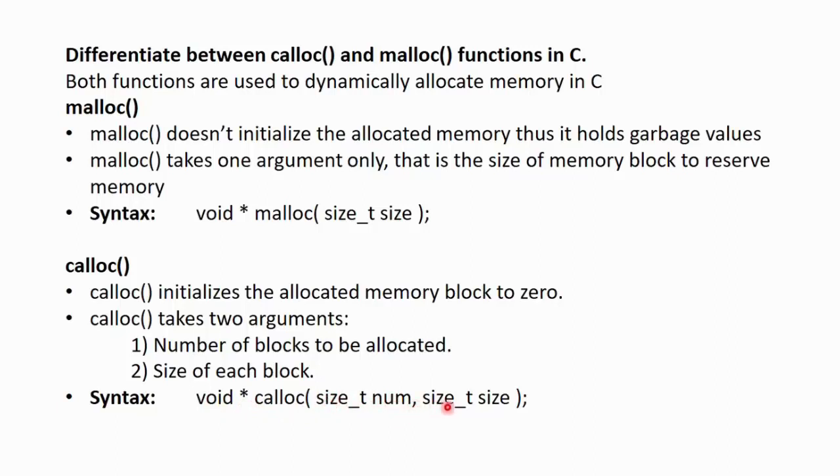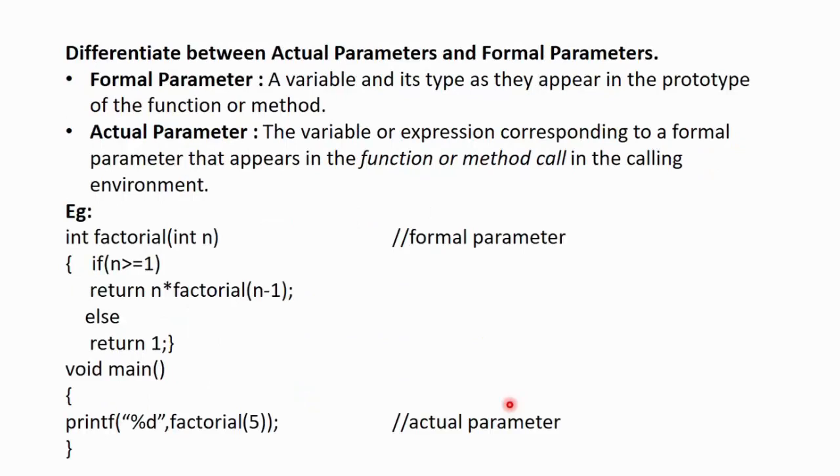Its syntax is void, asterisk, Calloc, the number of the blocks that need to be allocated, comma, the size of each block. Next question is differentiate between actual parameters and formal parameters. Formal parameter, a variable and its type as they appear in the prototype of the function or method. Actual parameter, the variable or expression corresponding to a formal parameter that appears in the function or method call in the calling environment.